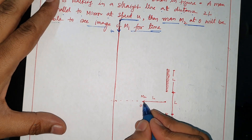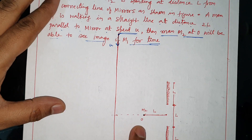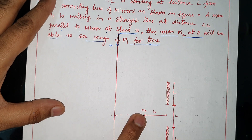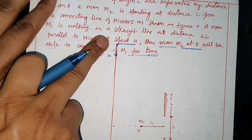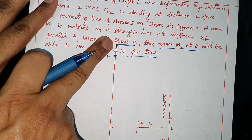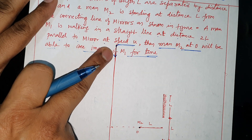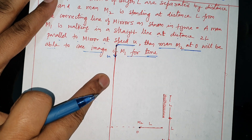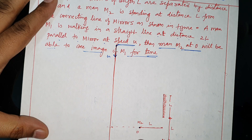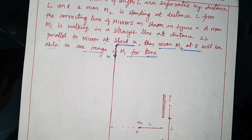So M2 is an observer, and M1 is a person — this person is an object — this man is walking at speed U. So we need to find for how much time M2 can see M1's image.